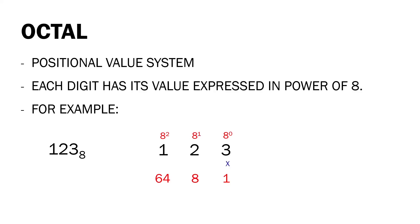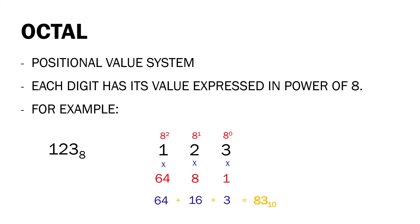So three times one is equal to three, two times eight is equal to 16, and one times 64 is equal to 64. We get the sum: 64 plus 16 is equal to 80, plus three is equal to 83. You will notice that the decimal equivalent is 83, because the decimal equivalent of any octal number is the sum of the product of each digit with its positional value in octal.